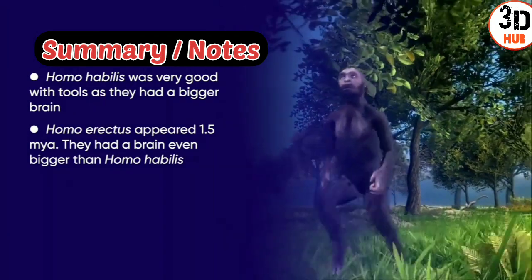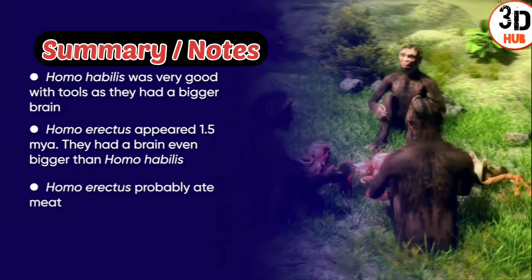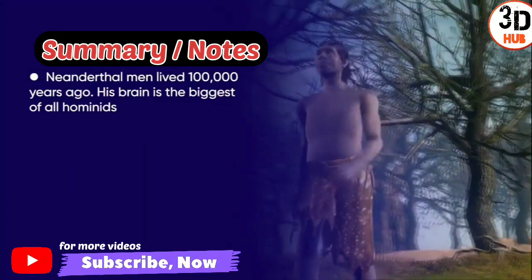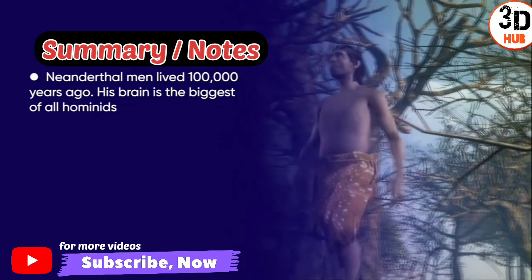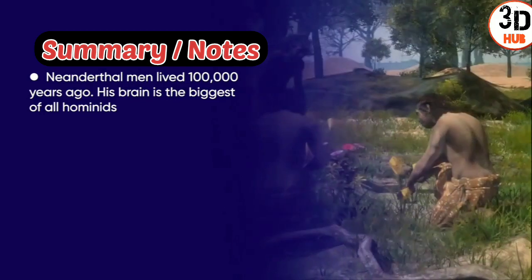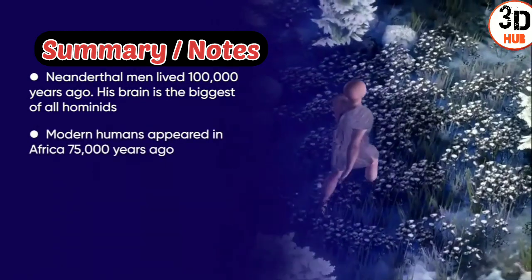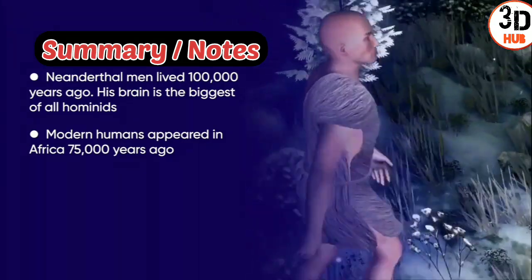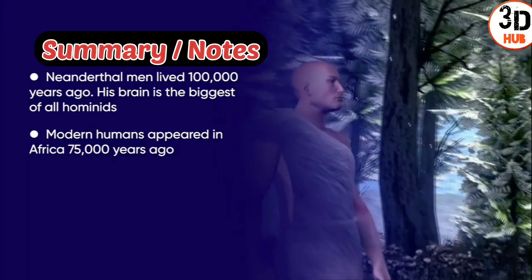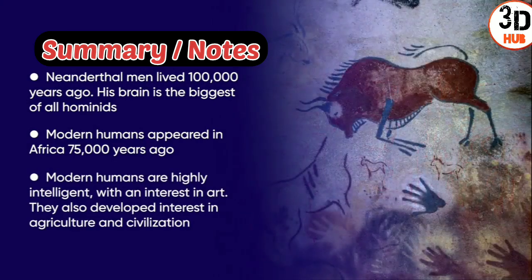Homo erectus was the next stage, appearing about 1.5 million years ago, with a considerably bigger brain and likely a meat-based diet. The Neanderthal man lived 100,000 years ago in Central and East Asia, had a huge brain, and developed complex behaviors. Finally, Homo sapiens — modern humans — appeared in Africa between 75,000 and 10,000 years ago, showing high intelligence, interest in art, and developing agriculture and civilization.